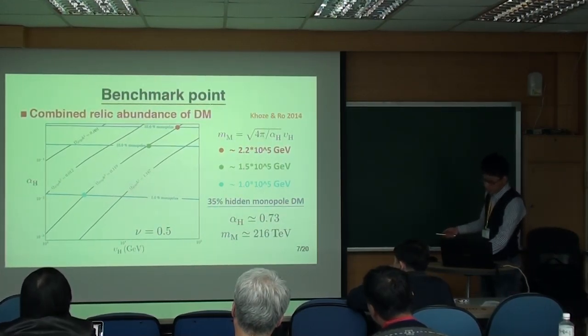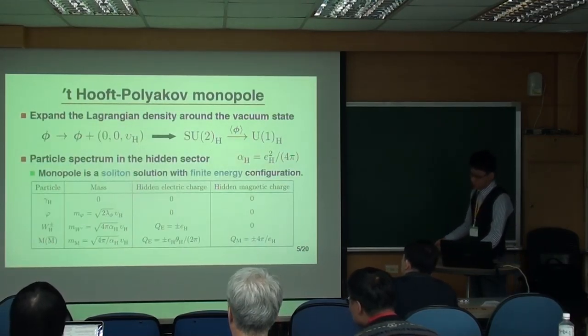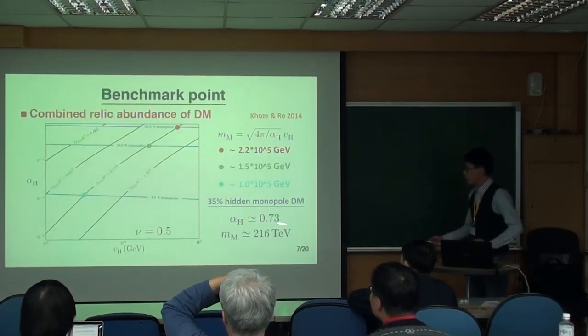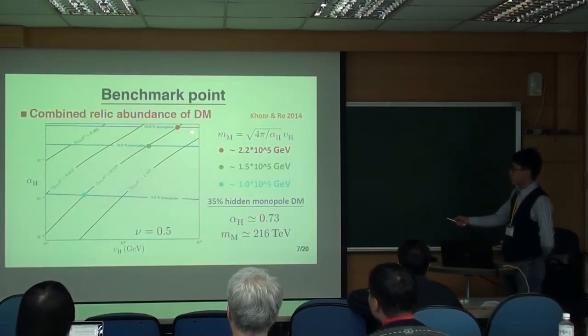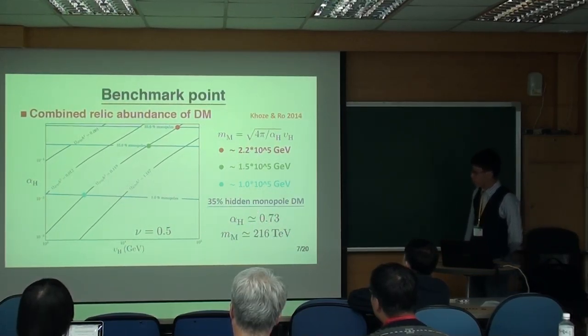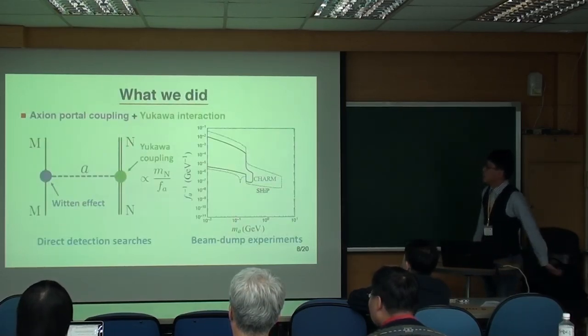So anyway, here in our study, we choose this red point as our benchmark point for the analysis. Where this alpha_h is around 0.07, and the monopole mass is around 200 GeV.